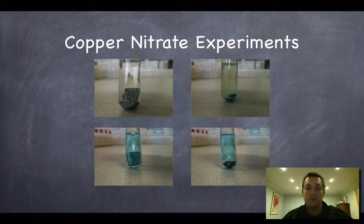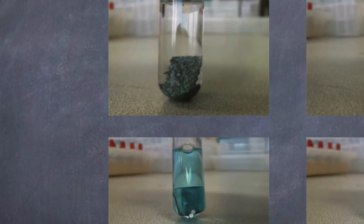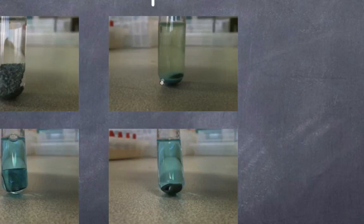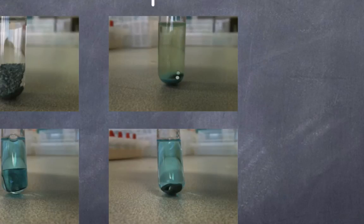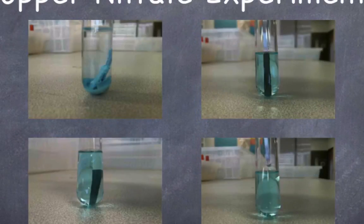Here are the copper nitrate experiments, split into two sections. On the left, the zinc experiment shows zinc starting clean and shiny, ending up coated in copper. Notably, the blue color of the copper ions in solution disappears — there isn't much copper left, it must have reacted. Similarly with lead, a blue solid forms at the bottom and again the blue copper ions have decreased, showing that lead atoms turned those copper ions into something else.